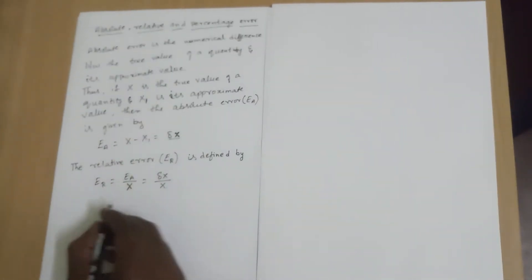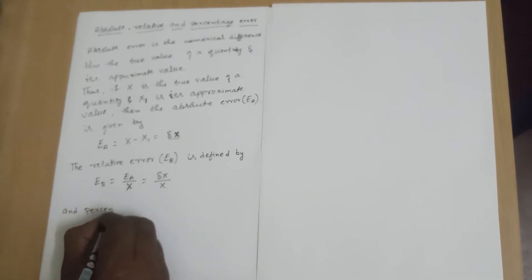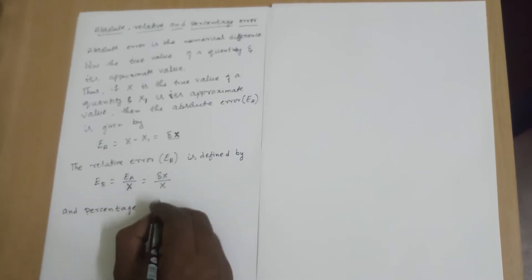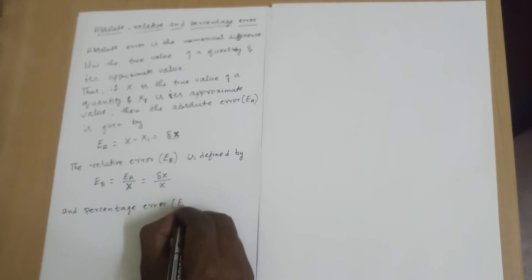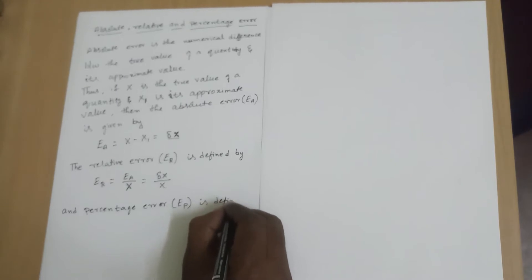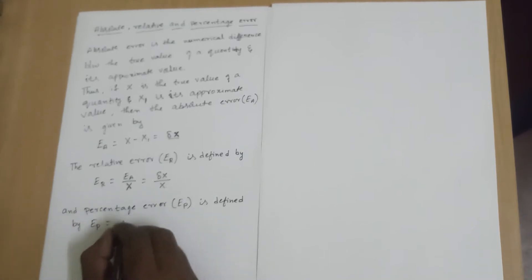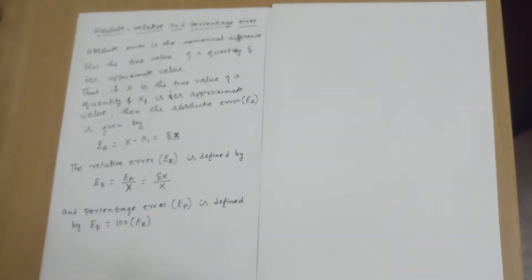And next, the percentage error is defined as Ea equals 100 into the relative error, that is 100 into delta X divided by X.